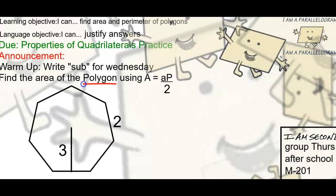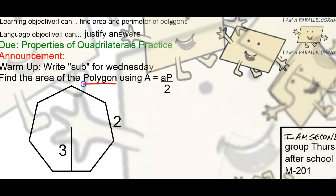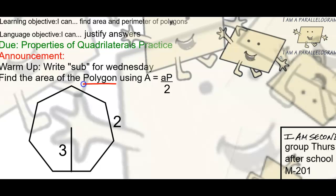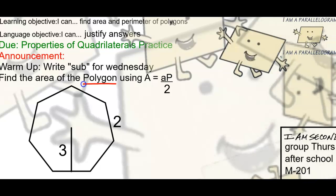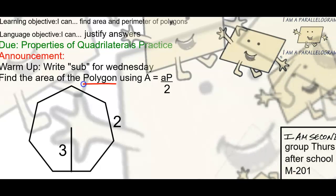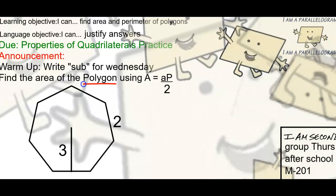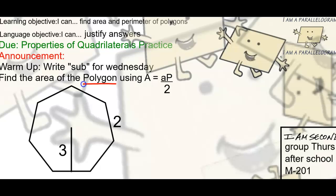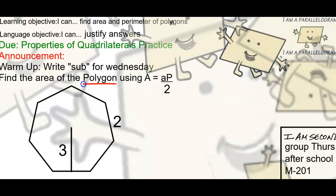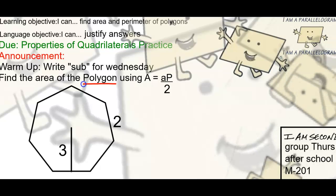Little a stands for... what's that word? Apothem. I learned this year that's actually how you say it. Big P stands for perimeter, divided by two.